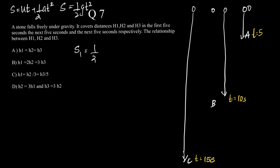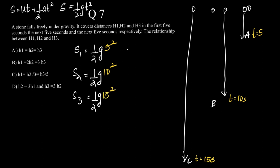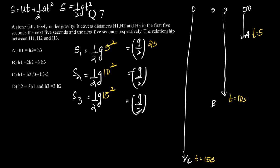So S1 equals half·g·t² evaluated at t=5. S2 equals half·g·(10)². And S3 equals half·g·(15)². This gives us: S1 = (g/2)·25, S2 = (g/2)·100, and S3 = (g/2)·225.